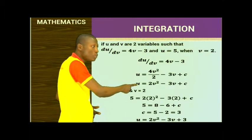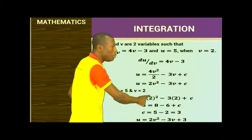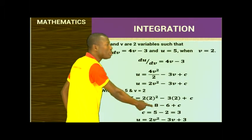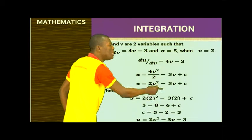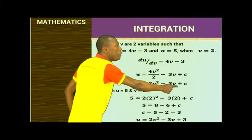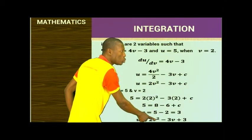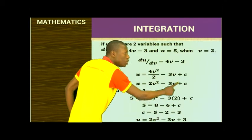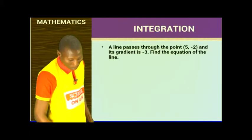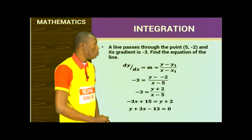When u equals 5 and v equals 2, I substitute: 5 equals 2(2)² minus 3(2) plus C. That gives 5 equals 8 minus 6 plus C, so 5 equals 2 plus C, and C equals 3. Now I put C equals 3 back into the equation, so u equals 2v squared minus 3v plus 3. That is our final equation.